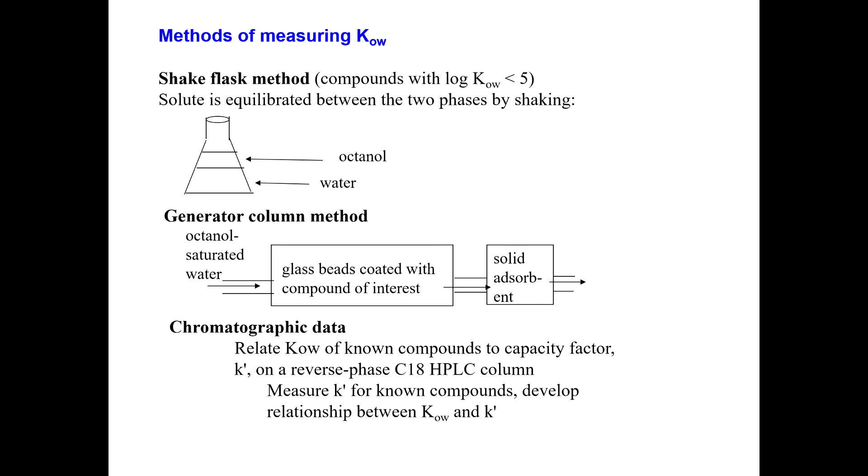This is actually pretty similar to what we talked about in terms of measuring the air-water partition coefficient, or Henry's Law, where you have a static method which we call the shake flask method. You spike the chemical probably into the water and then let it partition into the octanol. After you shake it for a while and let it come to equilibrium, you measure how much of it is in the water and how much is in the octanol.